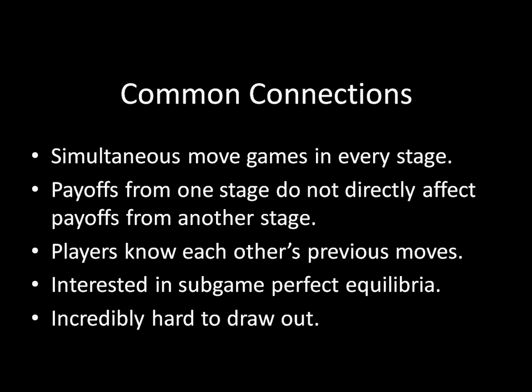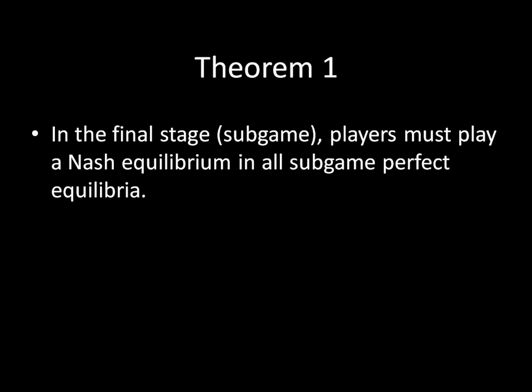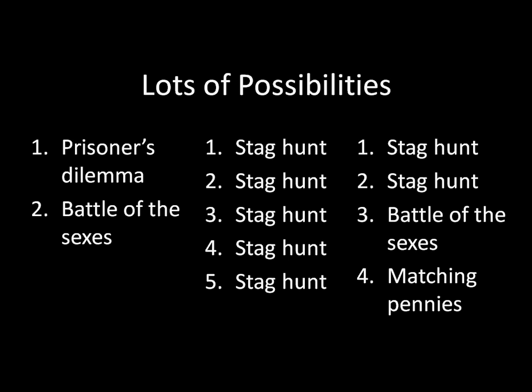When looking at games with these common connections, there are a couple of theorems that help us. Theorem 1 says that in the final stage, players must play a Nash equilibrium in all sub-game perfect equilibria. In the left column, when we play Battle of the Sexes, we must be playing ballet-ballet, fight-fight, or the mixed strategy Nash equilibrium. In the center column's fifth stage, we must either both be hunting a Stag, both hunting a hare, or playing a mixed strategy Nash equilibrium. In the right column's fourth stage — Matching Pennies — the unique Nash equilibrium is the mixed strategy, and that is the only thing that can be played.